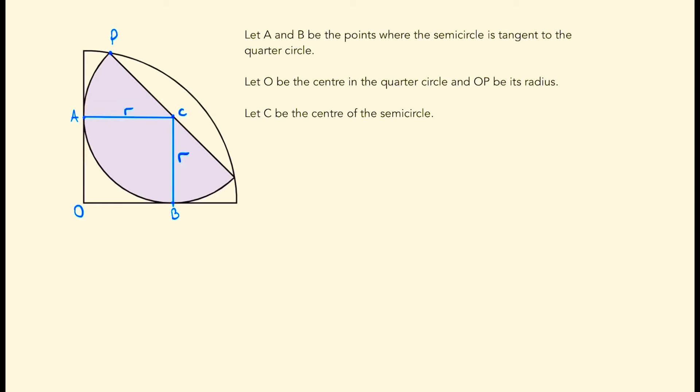And given that it's tangent, we know that the angle at OBC will be 90 degrees. We can say that O to P will be the radius of the quarter circle, which we'll label as capital R. What we can recognise now is that the points O, A, B, C will all form a square.